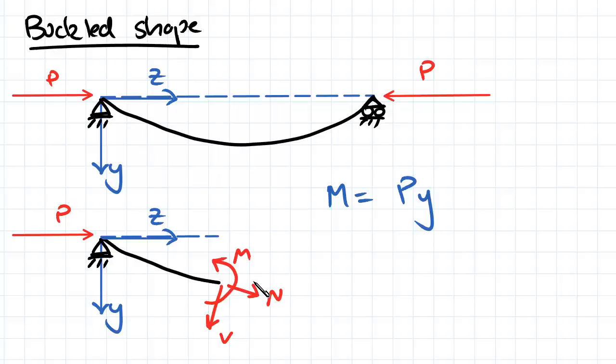So the next thing I want to use is the equation for deflection I came up with in the deflection topic. That is negative EI D squared Y.